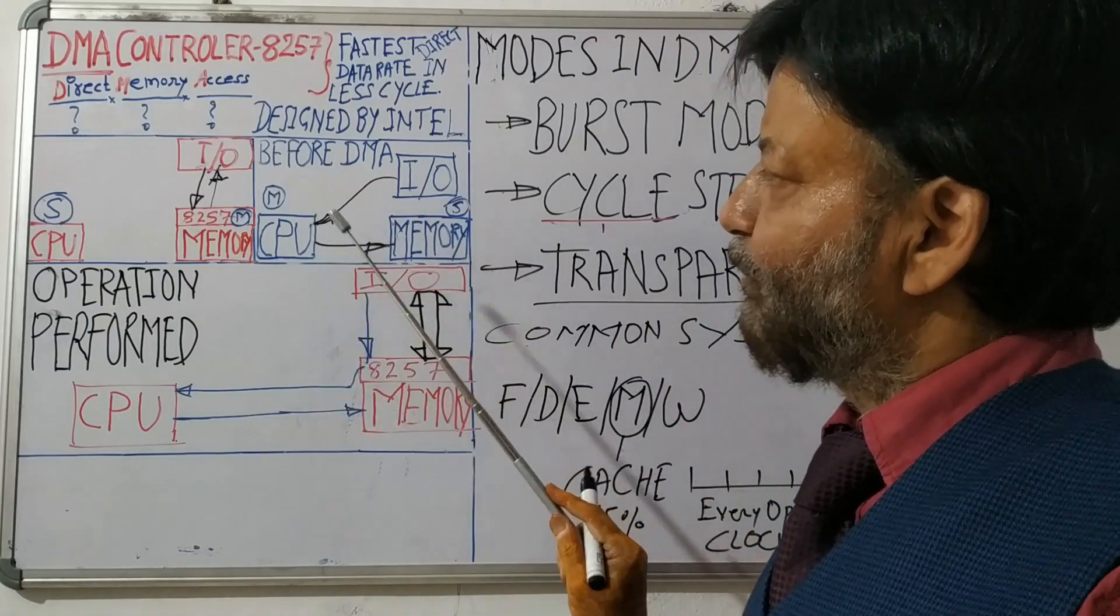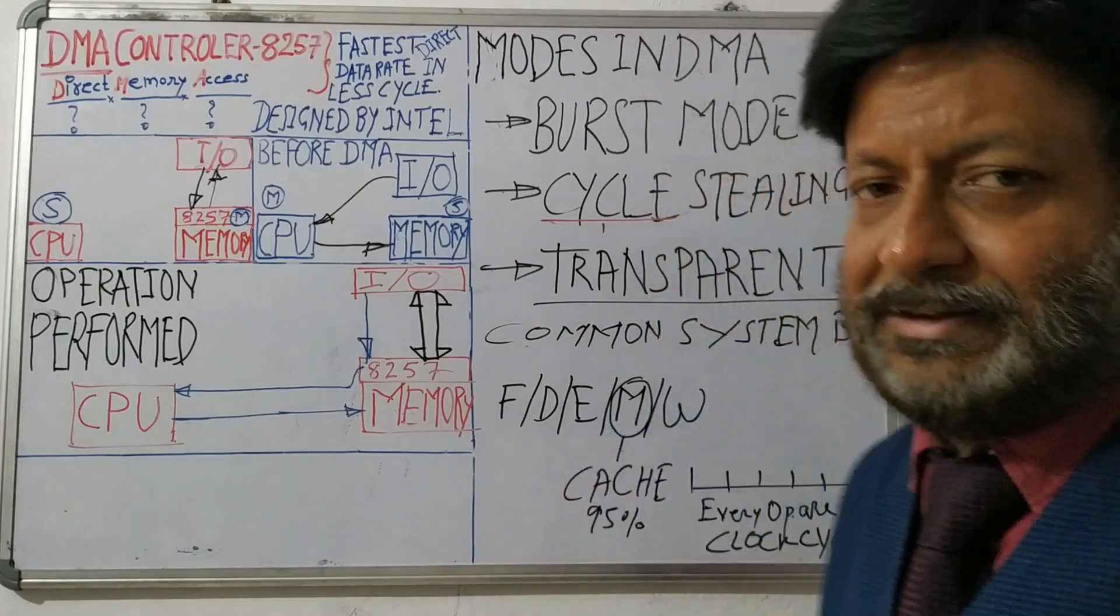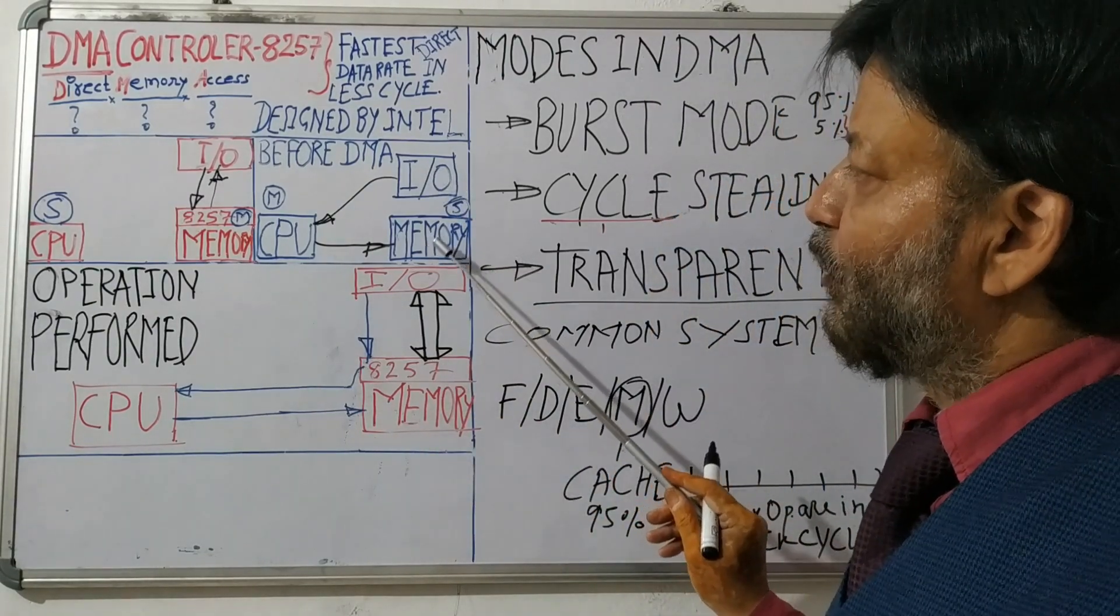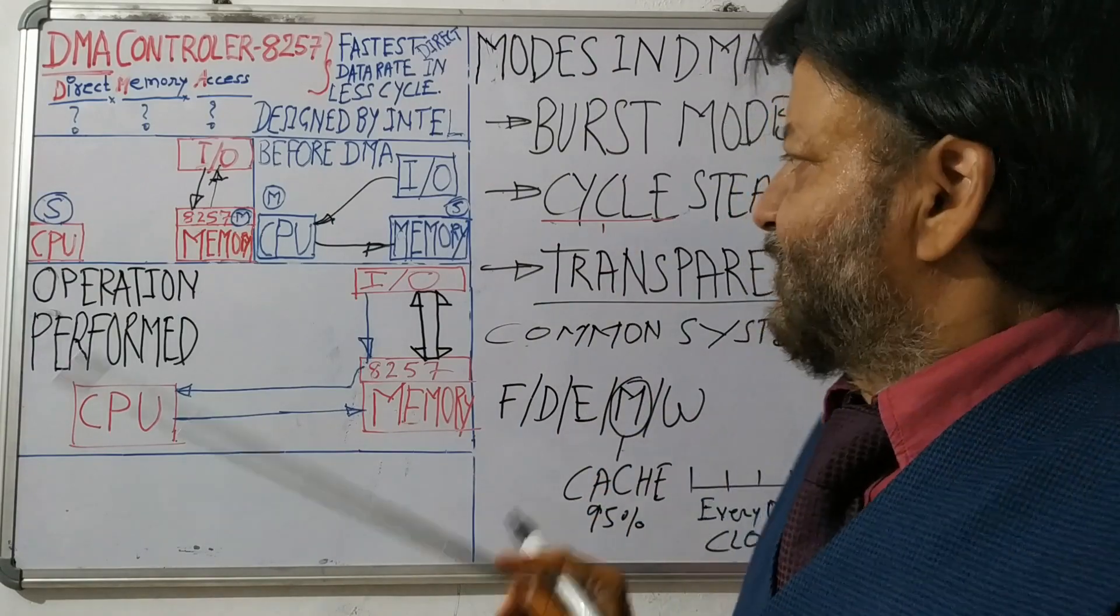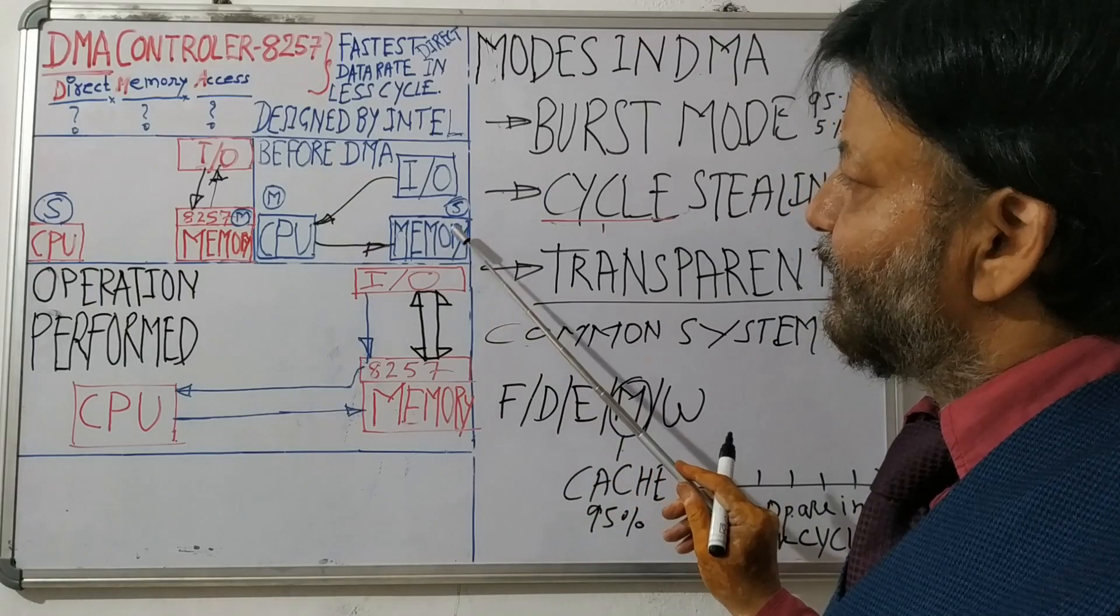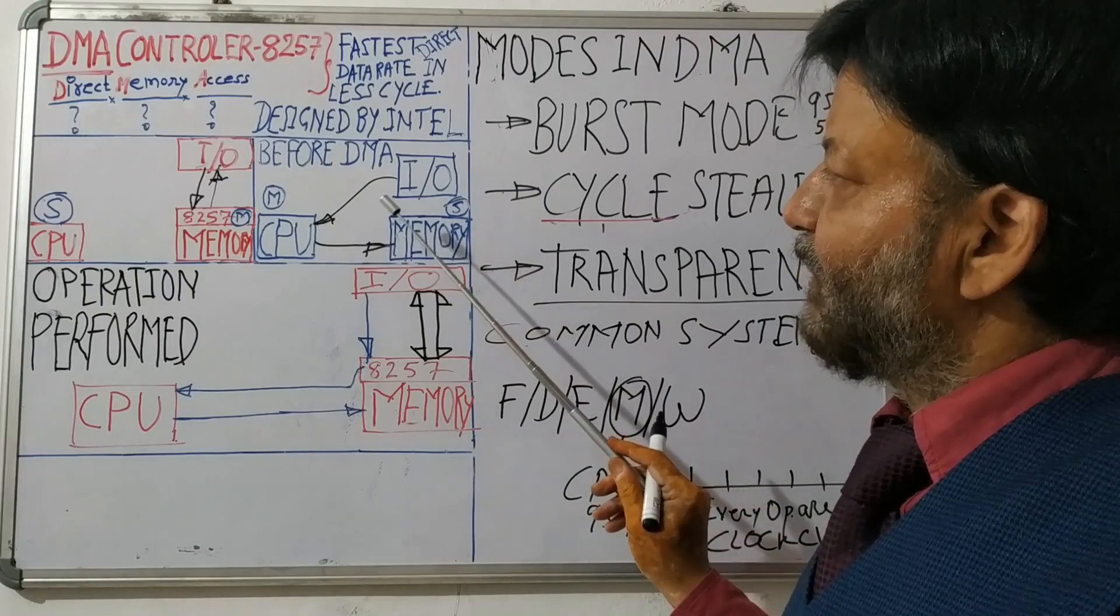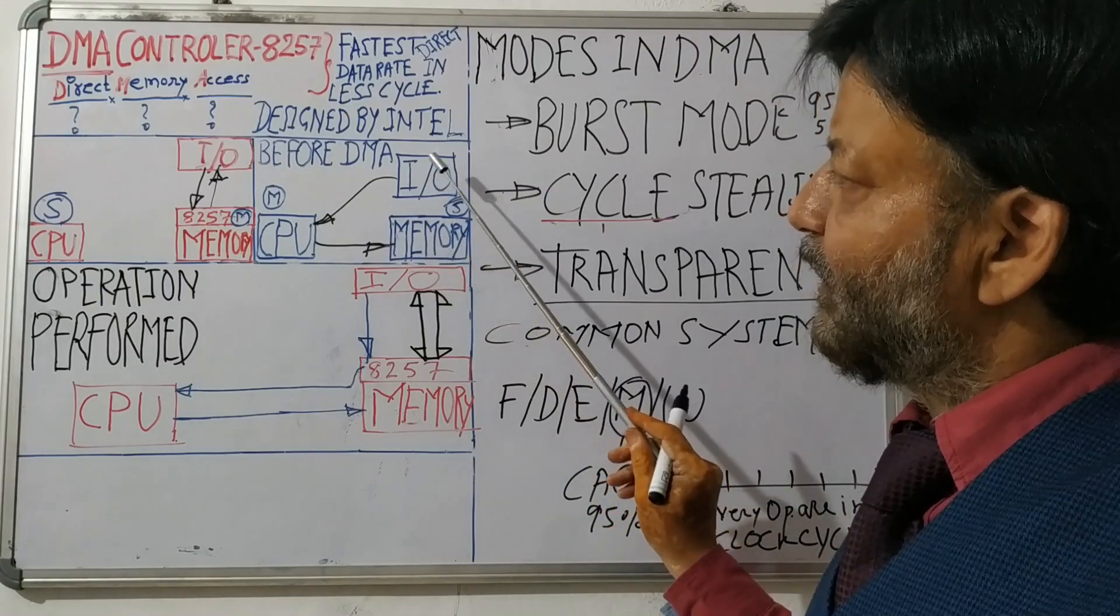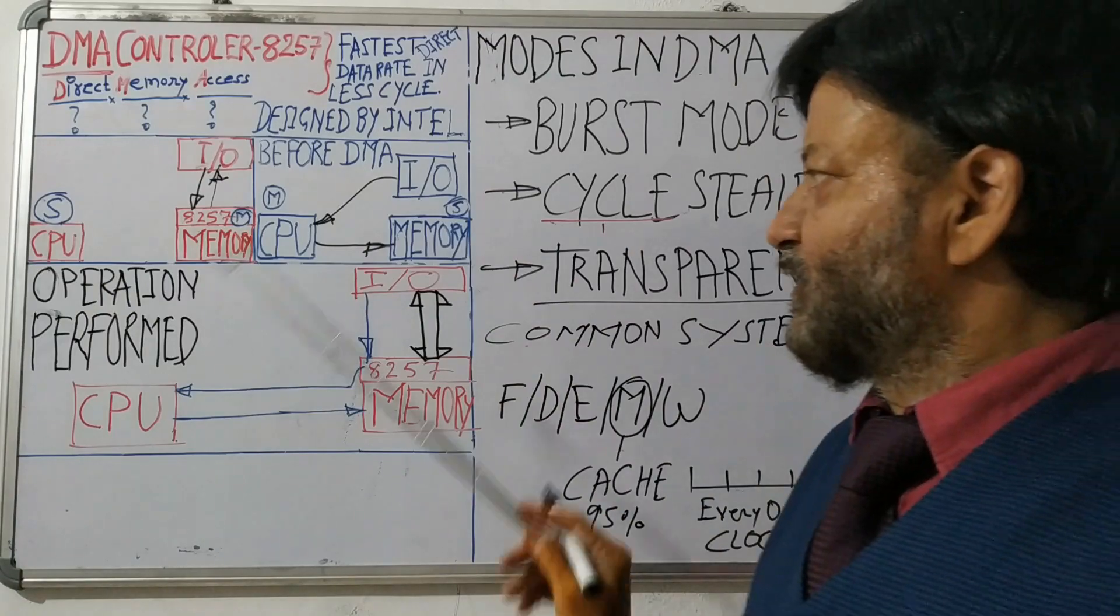So whatever things are happening or whatever data is writing from IO to memory or memory to IO, it cannot be without the help of CPU because CPU is master and memory is slave. So whatever is happening between these two are happening through the CPU.